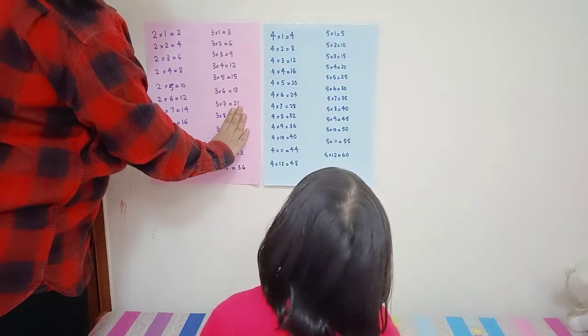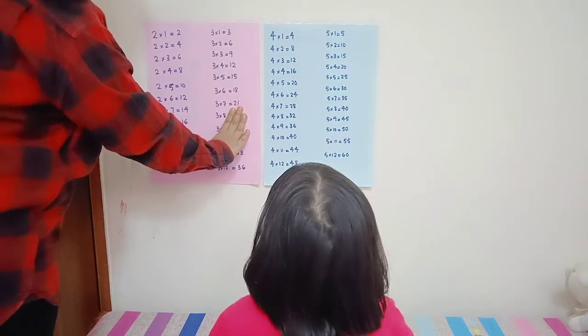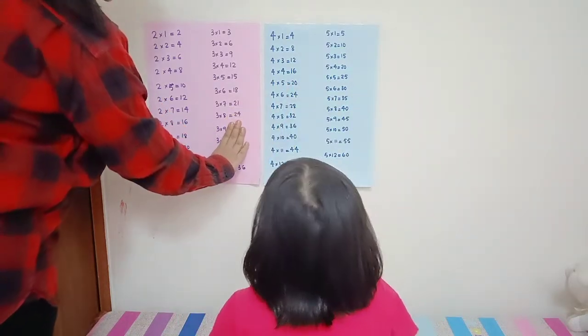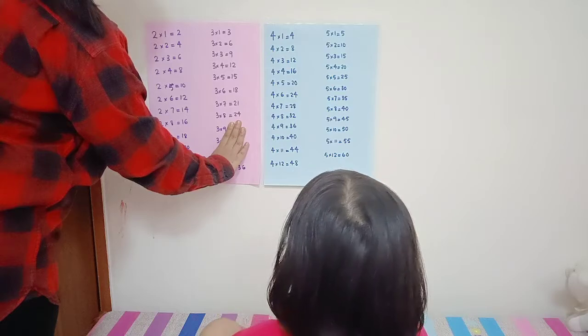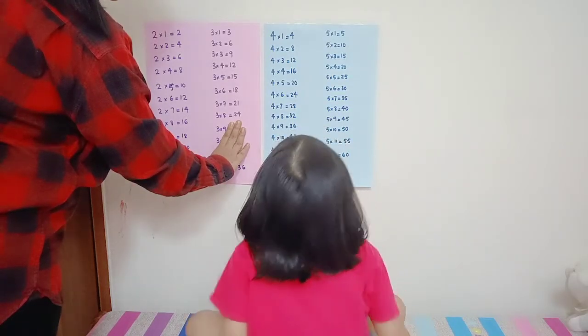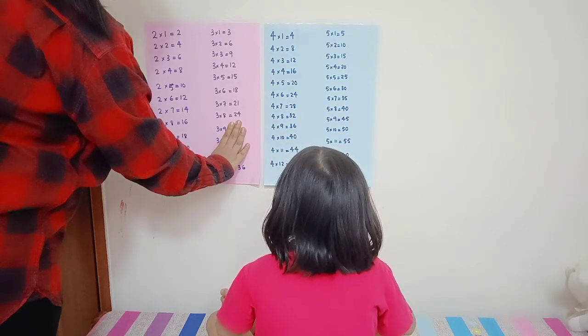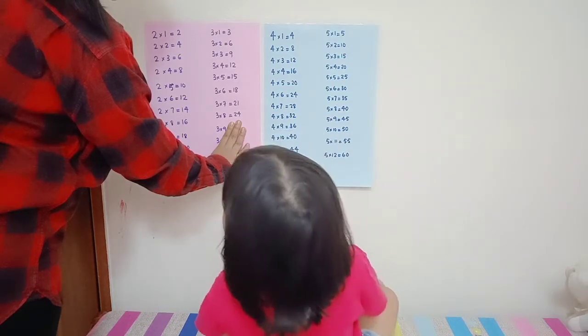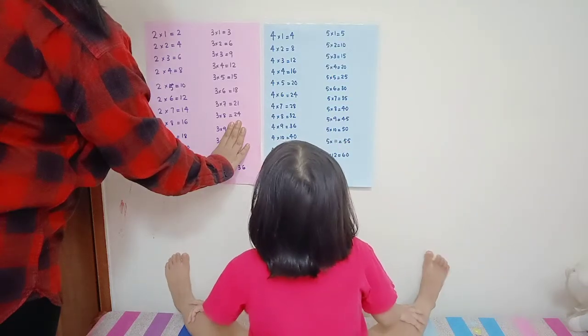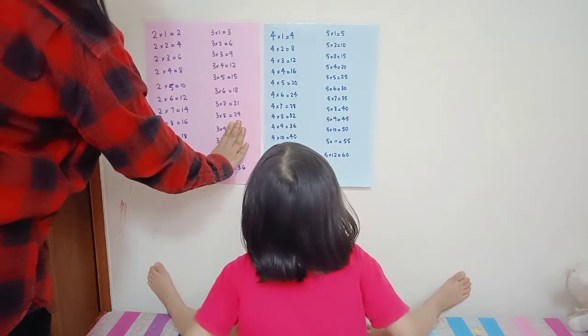Three times eight... three times eight... twenty? Twenty years? Twenty-four? Three times nine... twenty-eight? No. Twenty? Twenty? Twenty-nine? Twenty-nine? Twenty-six? No. Twenty-seven.